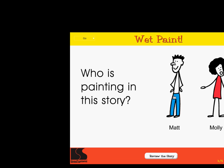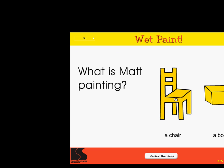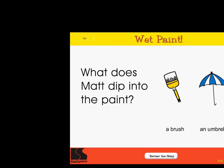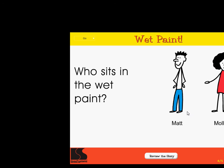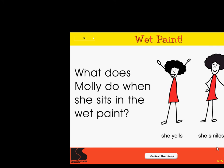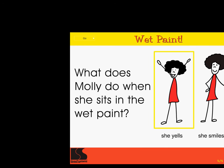Who is painting in this story? Matt. What is Matt painting? A chair. A box. Correct! What does Matt dip into the paint? A brush. An umbrella. Super! Who sits in the wet paint? Matt. Molly. What does Molly do when she sits in the wet paint? She yells. She smiles. Wow!